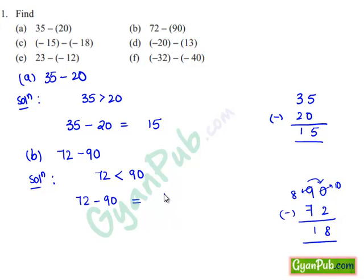We get 18, but it takes the sign of the bigger integer. Here we find that 90 is bigger than 72, so this 18 will take the sign of the bigger integer, which is minus. So the solution is -18.